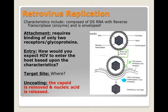HIV is one of those viruses that only requires one or two of those glycoproteins to actually bind to receptors on the host cell. It can enter a human cell very easily. Because of that attachment process, the entry is interesting — how would you expect HIV to enter the host based upon the fact that it's enveloped?